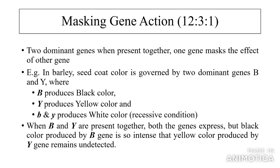Masking gene action: 12:3:1. When two dominant genes are present together, one gene masks the effect of the other. Example: in barley, seed coat color is governed by two dominant genes B and Y, where B produces black color, Y produces yellow color, and recessive bb yy produces white color. When B and recessive y are present together, both genes express, but the black color produced by gene B is so intense that the yellow color produced by gene Y remains undetected.